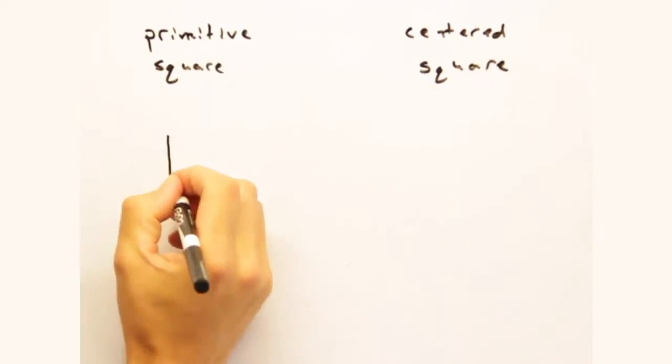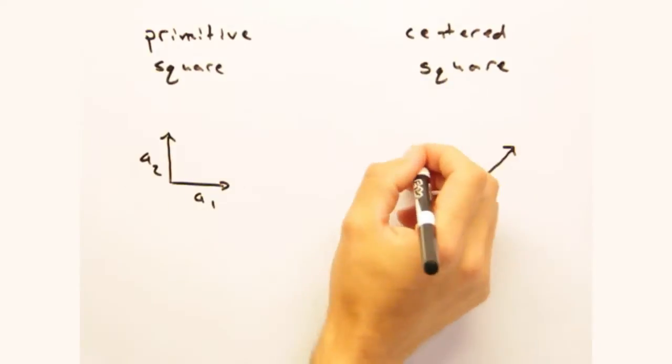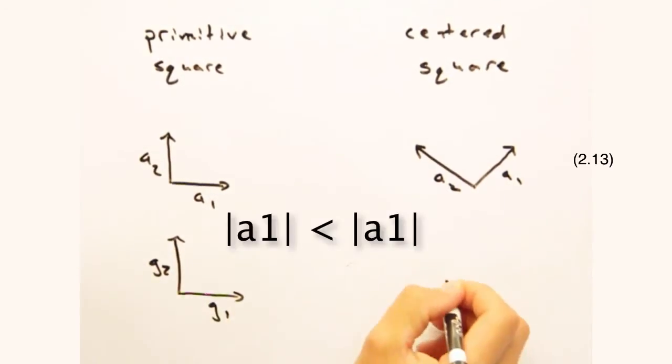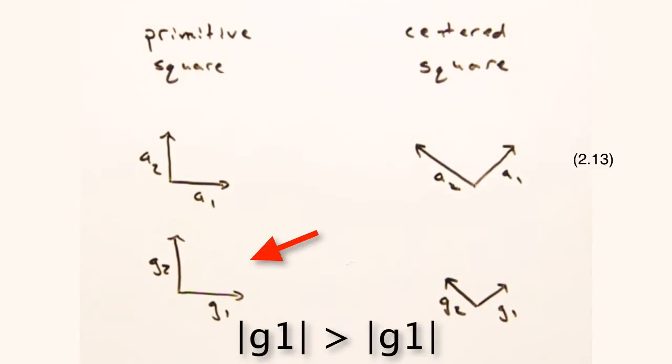On the left we have the primitive square cell and on the right we have the centered square cell. First I'll draw in the reciprocal vectors g1 and g2 for each cell. Because a1 and a2 are relatively small for the square cell, the corresponding g1 and g2 will be bigger than the g1 and g2 for the centered square cell.